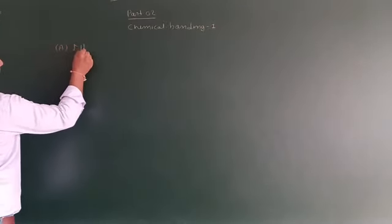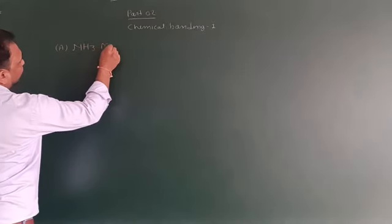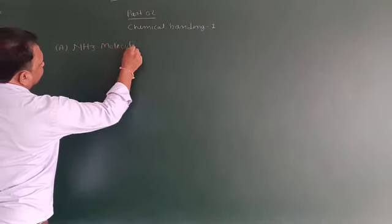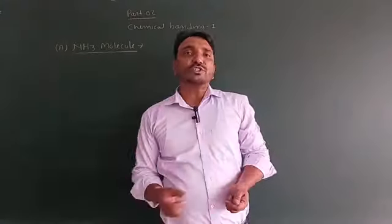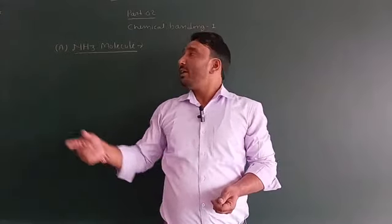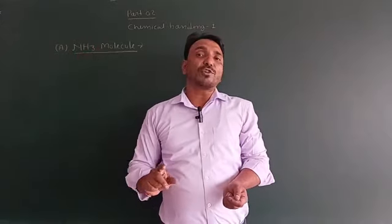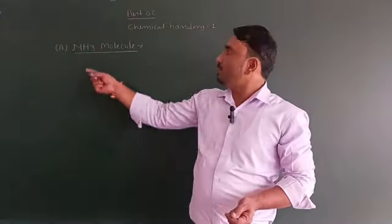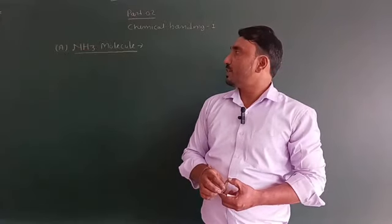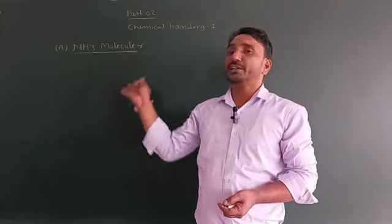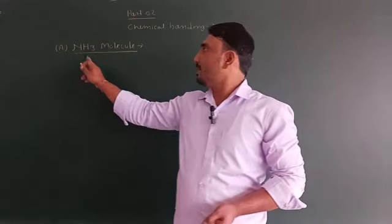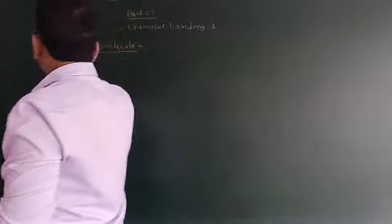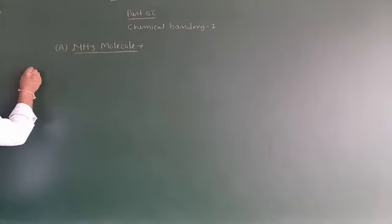NH3 molecule: हमको hydration geometry निकालनी है। 1 N और 3 H, total 4 atoms। Nitrogen सबसे कम amount में है तो यह central atom कहलाएगा। Hydrogen ligand कहलाएगा। 3 hydrogen हैं तो coordination number 3 है। NH3 में central atom N के लिए हम निकालेंगे।